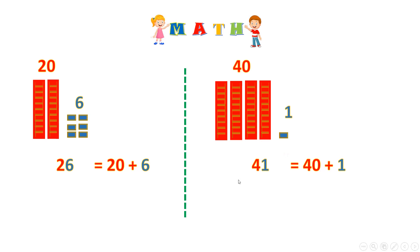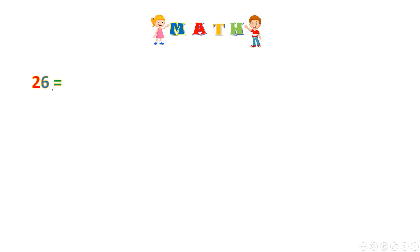Great job! Now we will move these shapes and we will work with only numbers. We had 26. 26 is 20 plus 6. Now 19 — 19 is what? Look: 26 is made of 2 tens. 2 tens are 20 with the red color, and 6 ones is 6. So 26 is 2 tens — 20 — and 6.